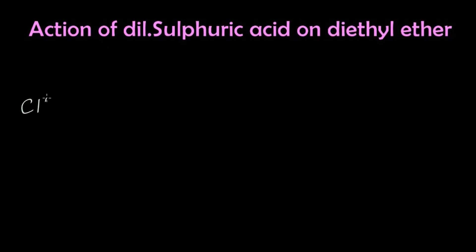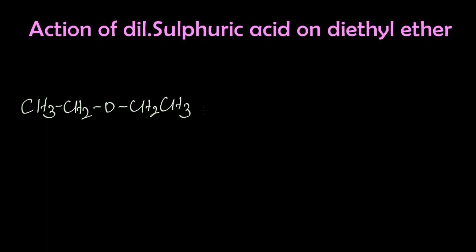Let's write the structure for diethyl ether: CH₃CH₂OCH₂CH₃. This is diethyl ether.